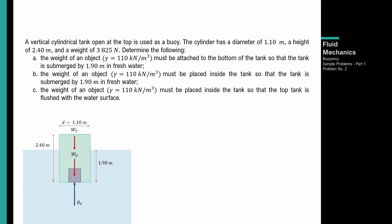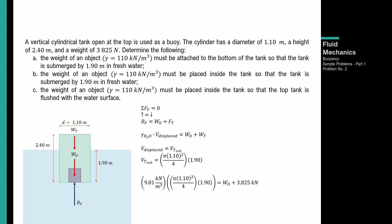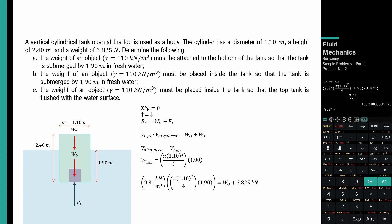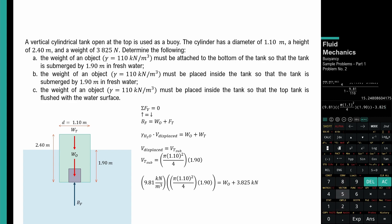Next scenario naman — nasa loob naman ng tank yung object. Summation ng vertical forces equal to 0, upward forces equal to downward forces. Volume displaced naman ay yung volume lang ng tank na nakasubmerge — mas simple yung equation. Therefore: 9.81 × π × (1.10)² / 4 × 1.90 minus 3.825. Weight ng object sa configuration na ito ay 13.8882 kilonewtons.